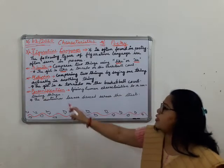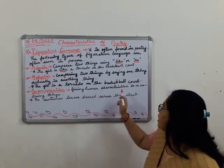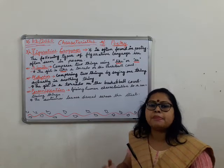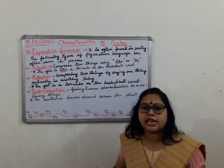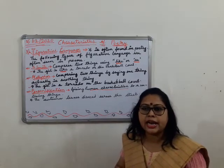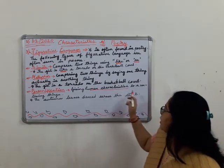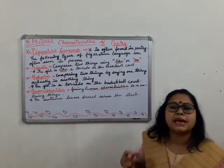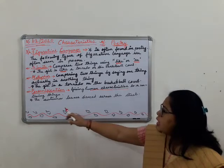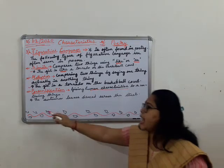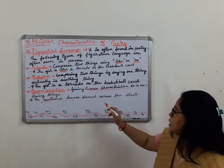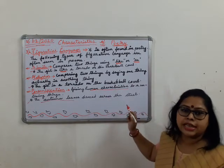Now the third type is personification. Personification means giving human characteristics to a non-living thing. For example: 'The autumn leaves danced across the stream.' In this line, the autumn leaves are described as dancing — which is a human characteristic being given to a non-living thing.